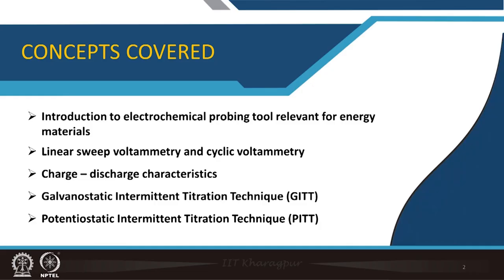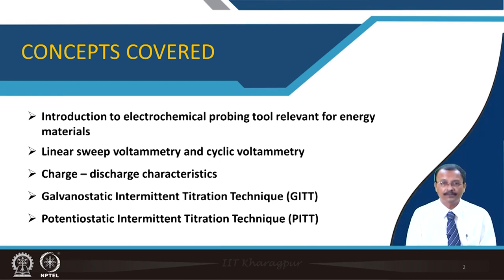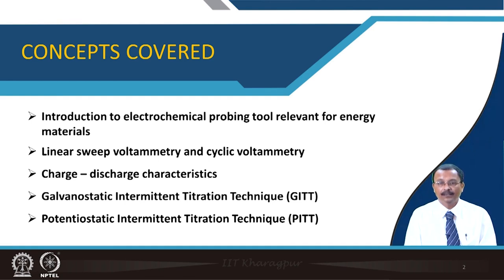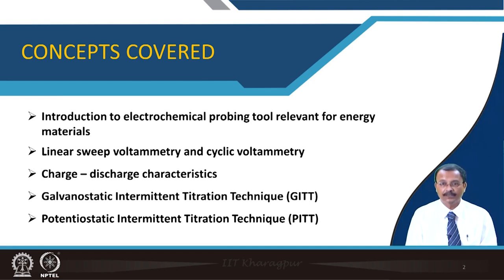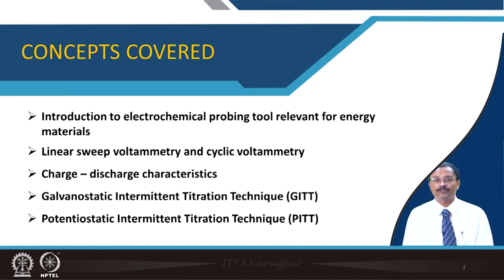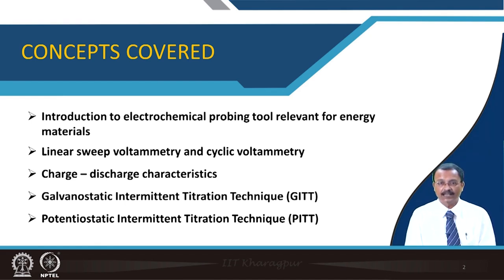First, we will introduce the electrochemical probing tool relevant for energy materials. Then, we will introduce the concept of linear sweep voltammetry and cyclic voltammetry. Then we will talk about charge-discharge characteristics measurement, and finally, galvanostatic intermittent titration technique and potentiostatic intermittent titration technique, abbreviated respectively as GITT and PITT.